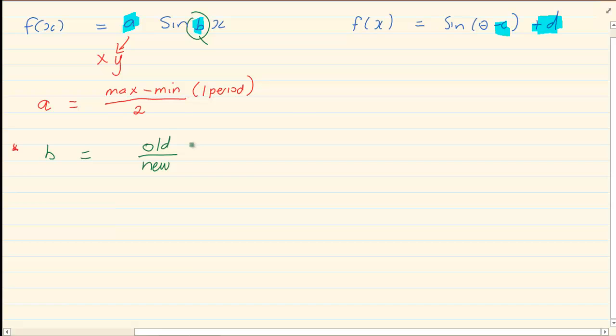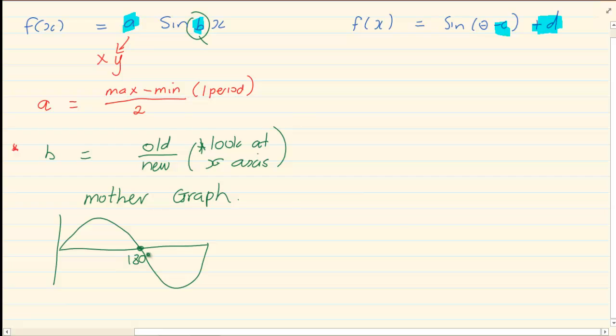What it means is if you look at your x-axis and then you look at your mother graph. Now, you remember your mother graph. Your mother graph is the very, very first graph you did. Then you are going to say, if I look at my mother graph, if I take a sin graph, that original point is 180 degrees. That is considered an old point.